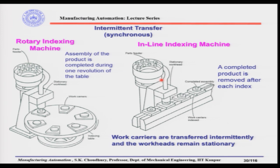The inline indexing machine moves parts from one place to another in a straight line and then stops. The rotary indexing machine moves parts in a circular motion — that is the difference. But in both cases, parts go from one place to another and stop for some time.